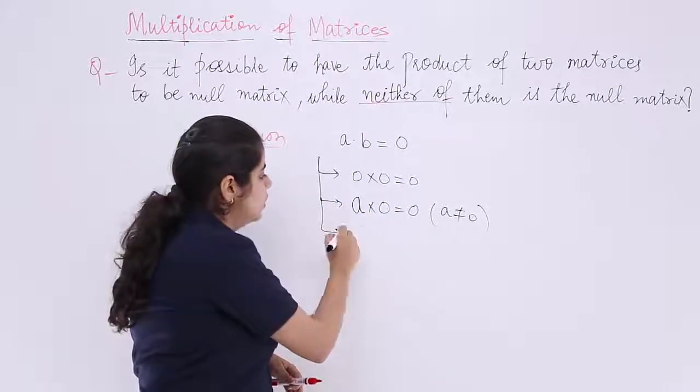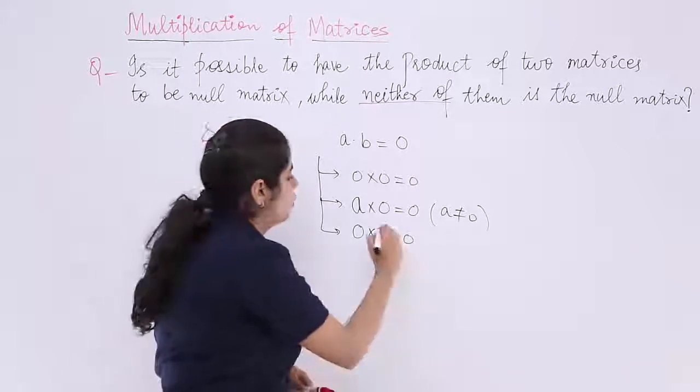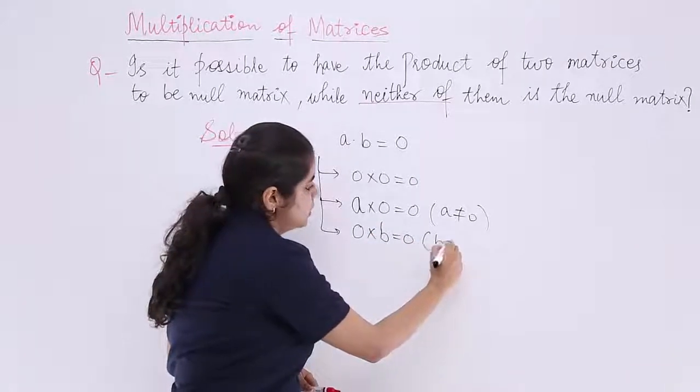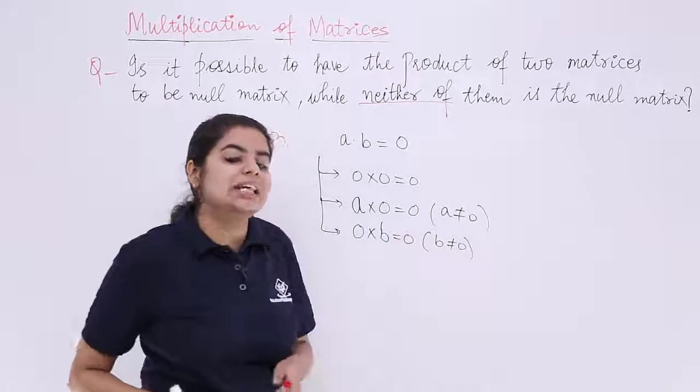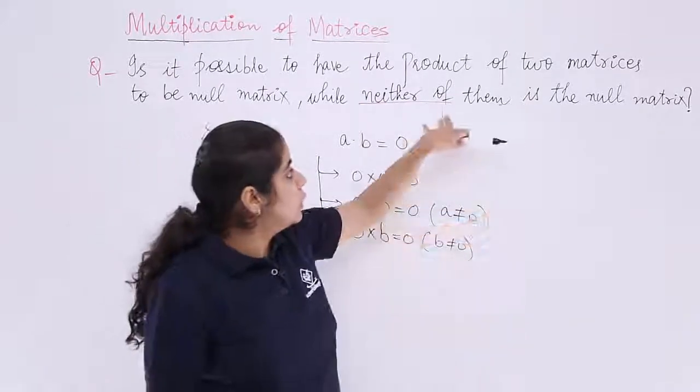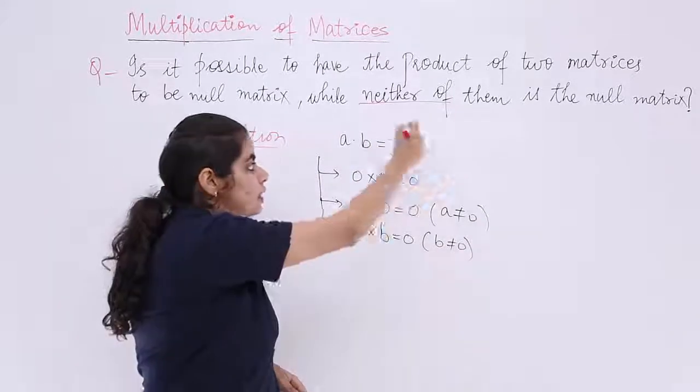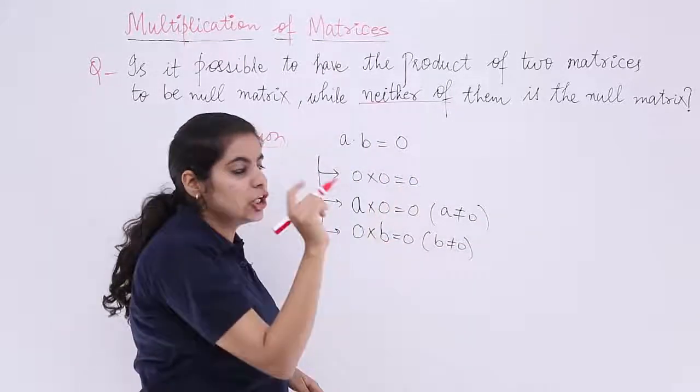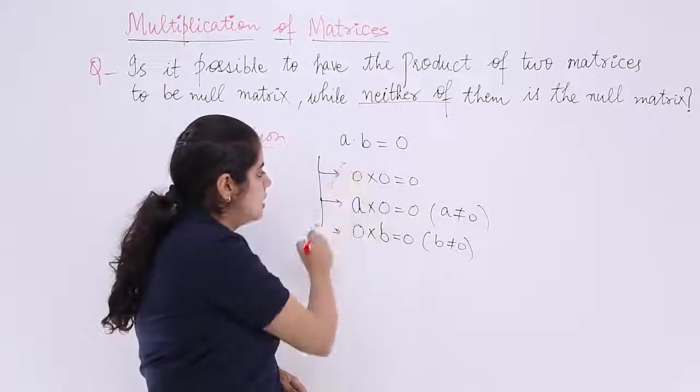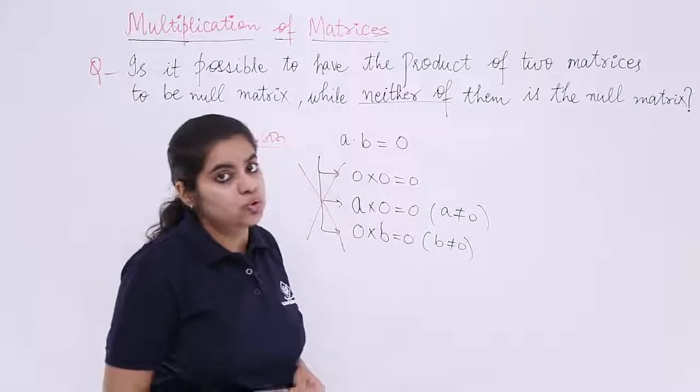The other case is you can take the first number as 0 and the second number as non-zero. So these three cases are there, but the question says that neither of them should be 0 or null matrix. So if these are matrices I cannot take these three cases. These three cases would not be valid in this question. So what to do?